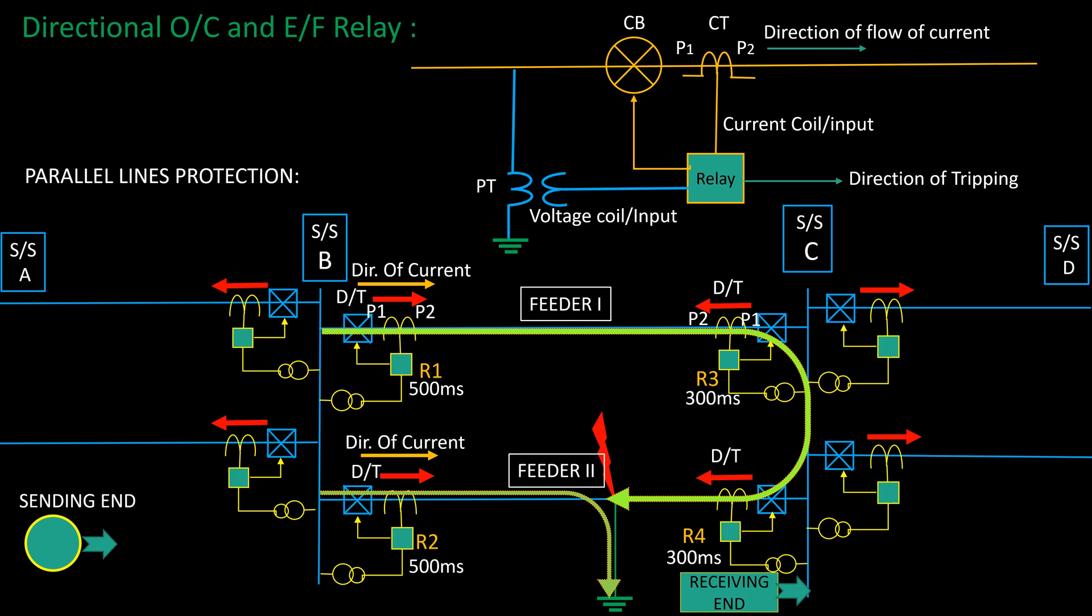Again, this fault current uninterruptedly reaches at the fault point, facing relay R4 where direction of flow of fault current is same as the direction of tripping of the relay, and the relay R4 issues a trip of the respective circuit breaker.